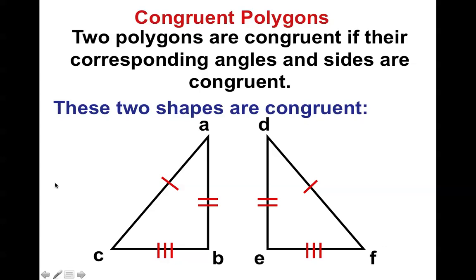Do you notice the shapes that we're using here? These two lines and these two lines indicate that these two sides are the ones that are congruent. If we used only one line with each, it would be hard to tell which side was congruent with which side.